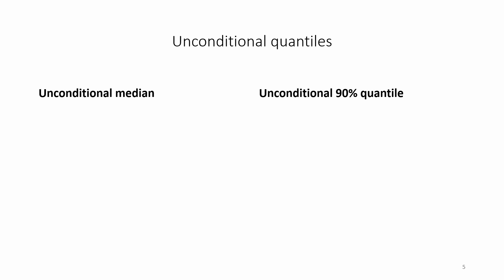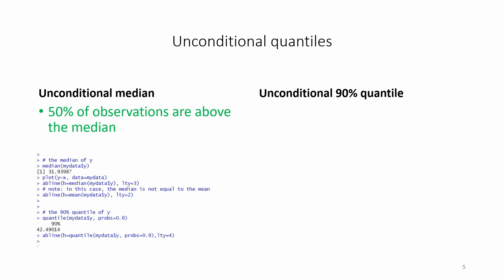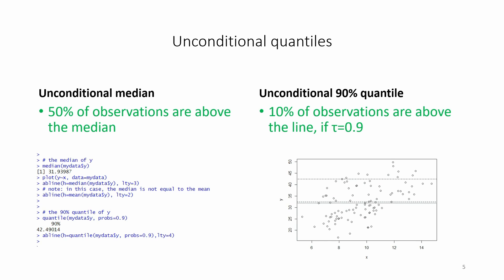Thinking about the unconditional mean and the conditional mean can help us get started in thinking about quantile regression. Let's first consider the unconditional median, where 50% of observations are above and 50% are below. The median at 31.9 is similar to the mean, calculated earlier as 32.4. At the unconditional 90% quantile, 10% of observations are above the line, calculated here as 42.49. This graph shows the unconditional mean, median, and 90% quantile as horizontal lines plotted over the data points.